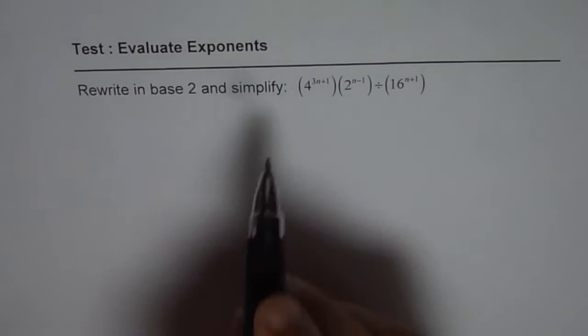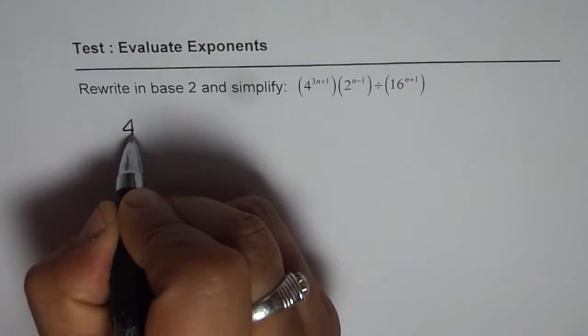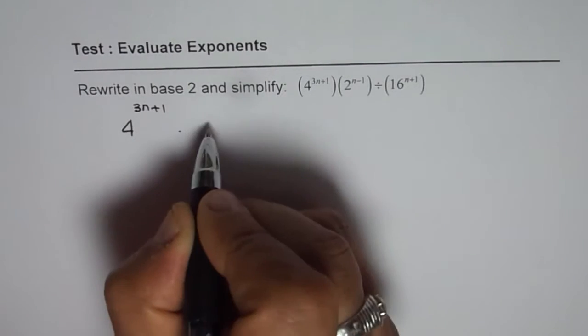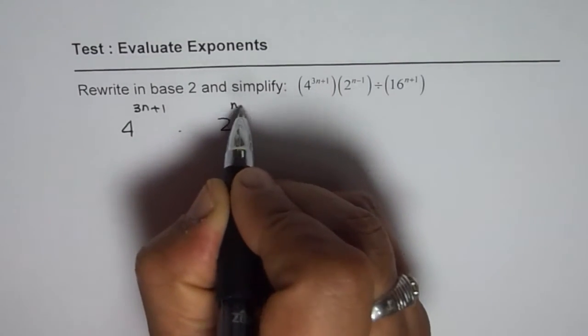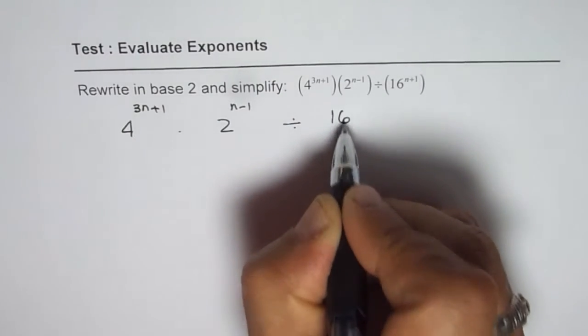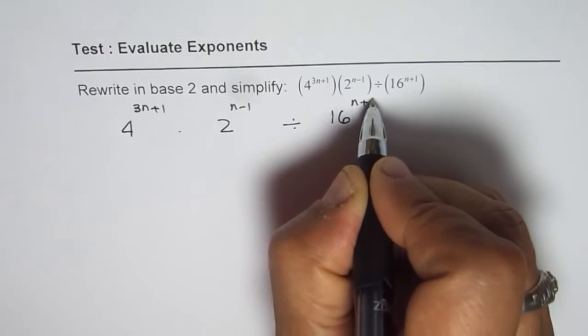So let me rewrite the whole thing first. We have 4 to the power of 3n plus 1 times 2 to the power of n minus 1, and we are dividing that by 16 to the power of n plus 1.